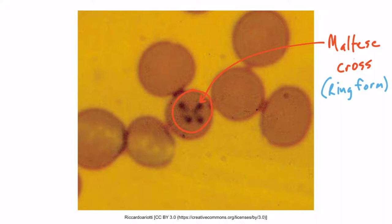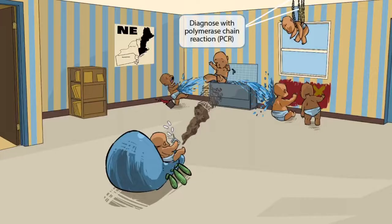These are also called ring forms, which is a strange term because it looks like a cross, not a ring. To remember that it can be called a ring form, think of four skydivers falling through the sky holding each other's hands — they kind of form a ring. So we have one skydiver, another, another, and another, and all four are holding hands forming that ring shape.